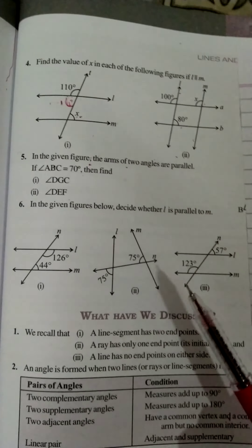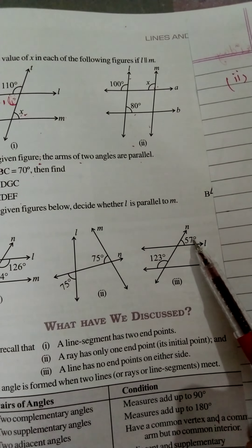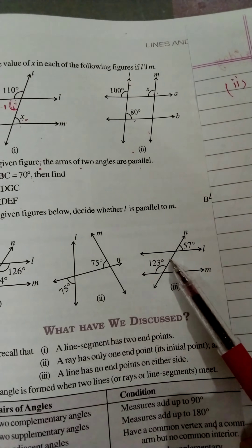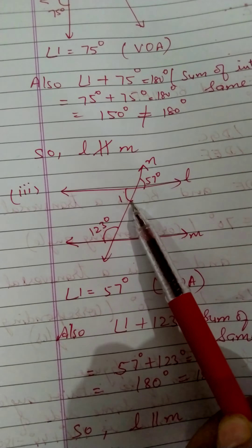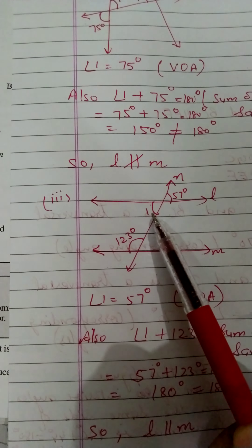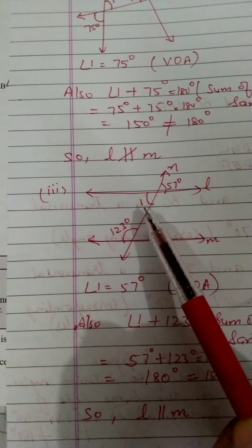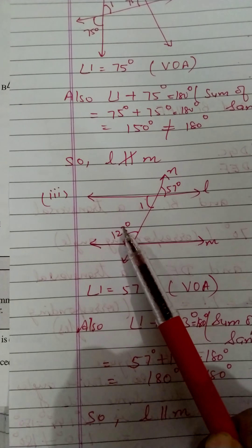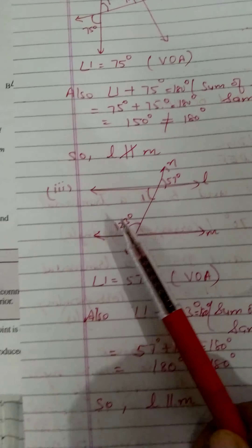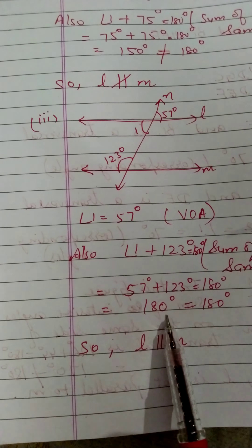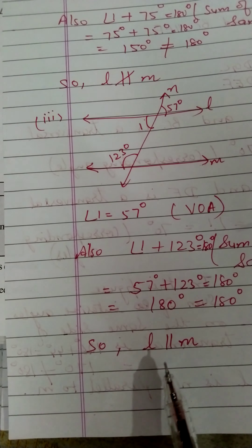Third part में 57 degree और 123 degree दिए हैं। Angle one vertically opposite angle है, यानि वह भी 57 degree है। फिर से same property — sum of interior angles on the same side of the transversal should be 180 degrees। 57 + 123 = 180 degree आ रहा है। इसका मतलब L line M के parallel है।